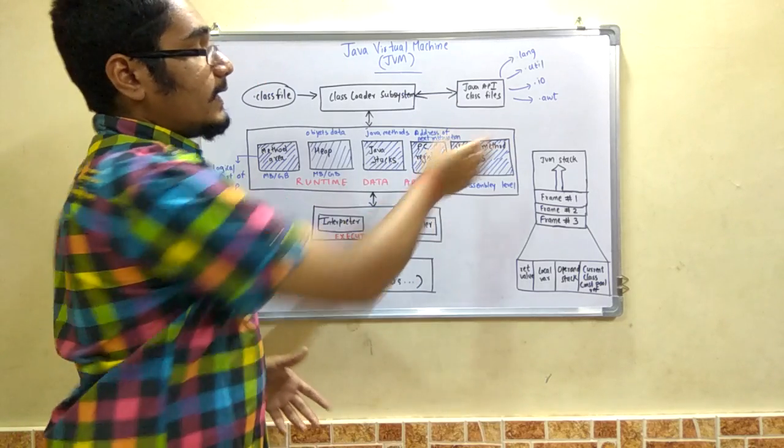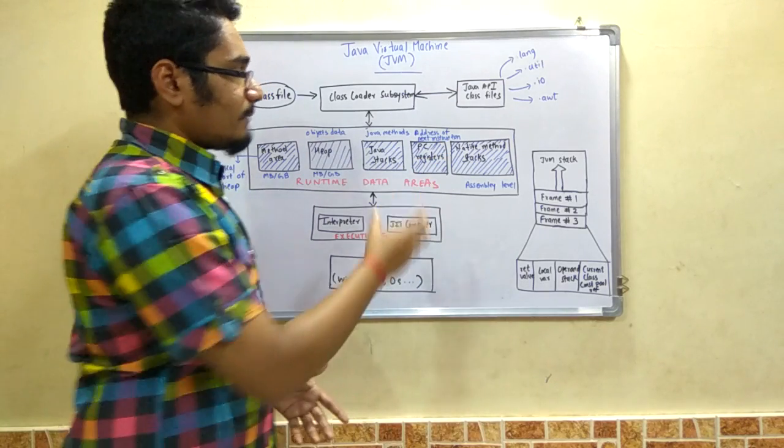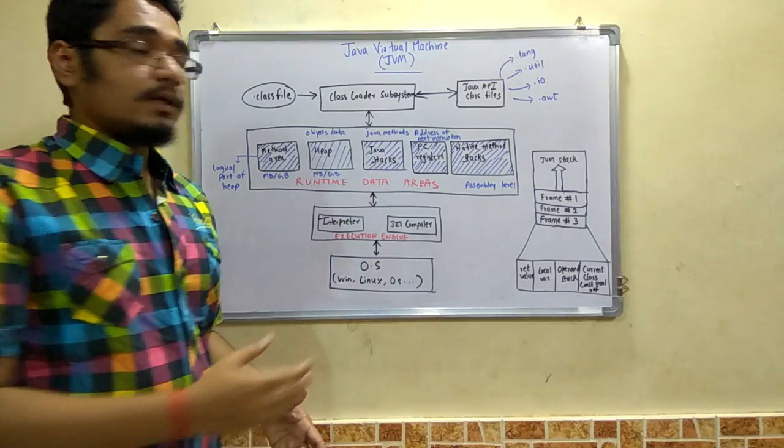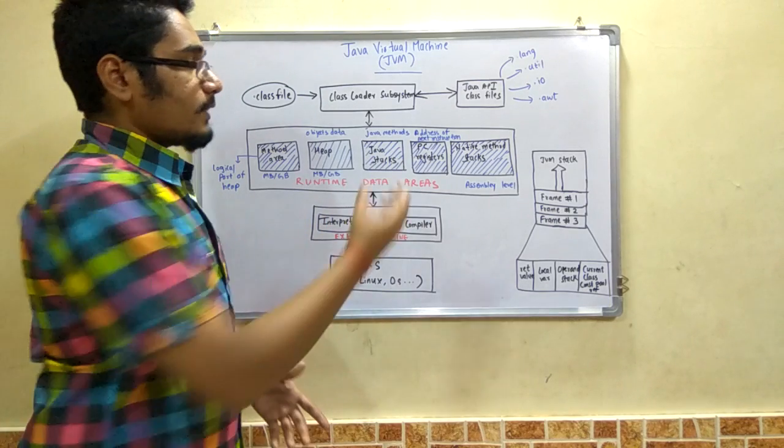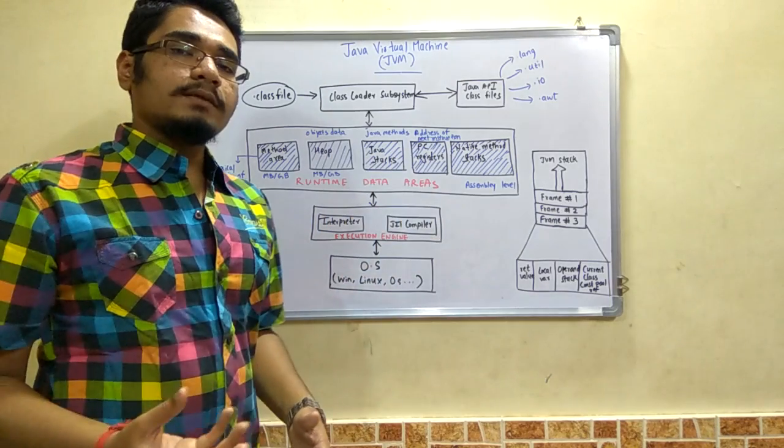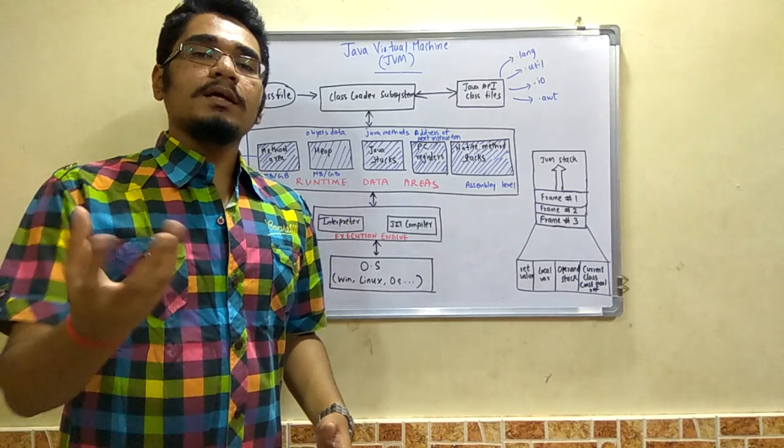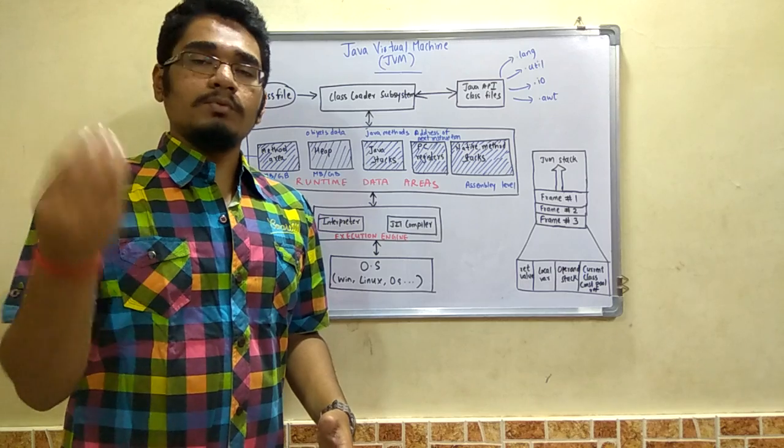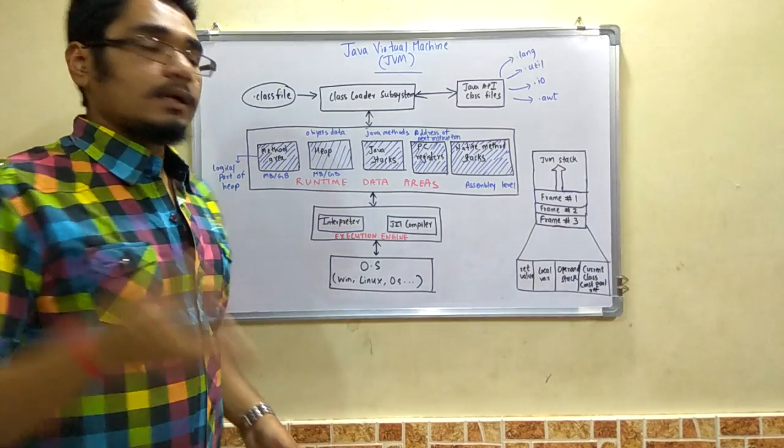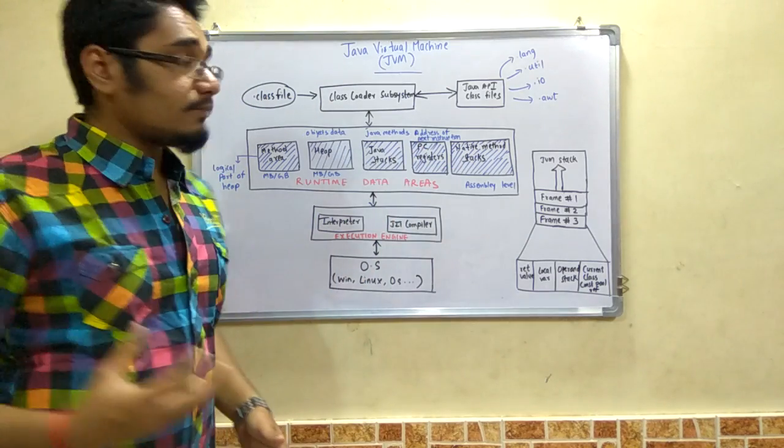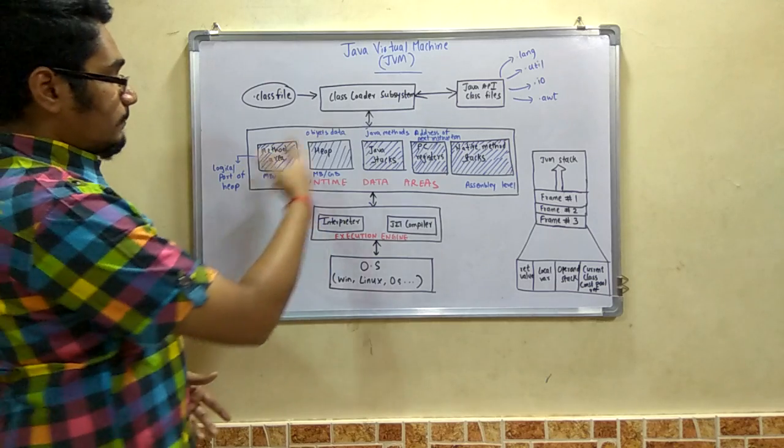So moving on to the next component, that is the native method stacks. This native method stacks and the java stacks perform the same operation, but the native method stacks is used for printing any of the assembly level or the machine level. In fact, the machine level outputs to be printed are classified under the native method stacks. So this completes the runtime data area.